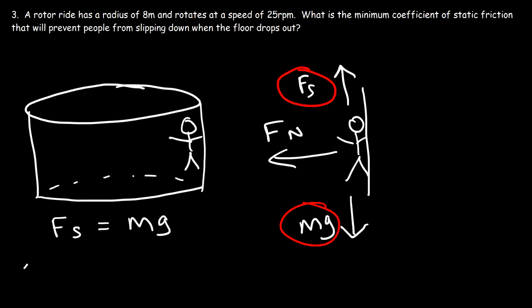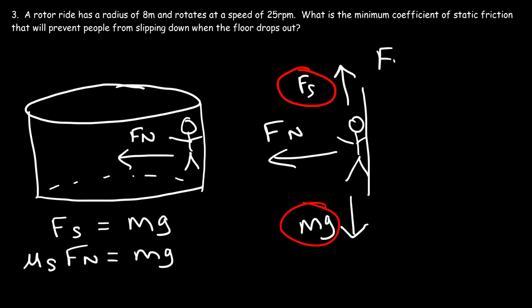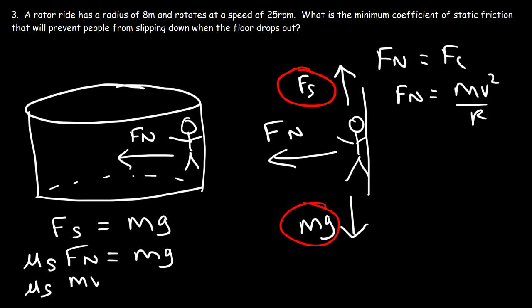Static friction equals mu_s times the normal force. The normal force points towards the center of the circle, so the normal force provides the centripetal force — it keeps the person moving in circular motion. Therefore the normal force equals mv squared over r. So we have mu_s times mv squared over r equals mg.